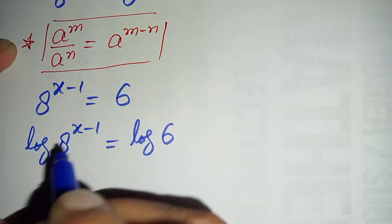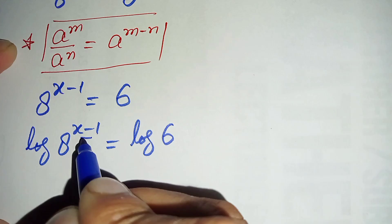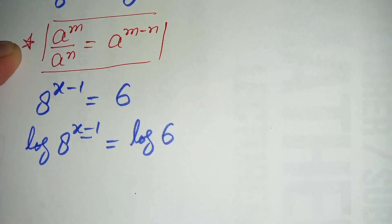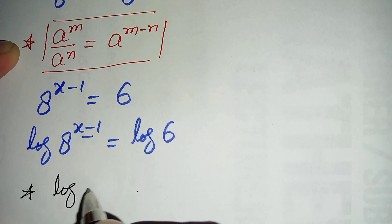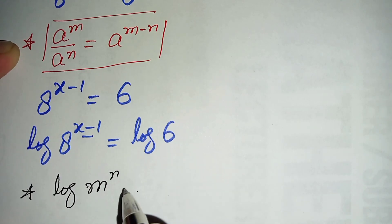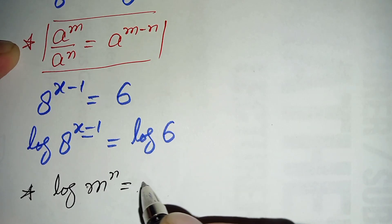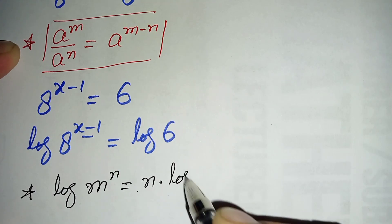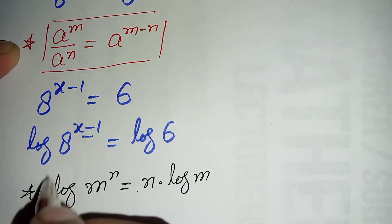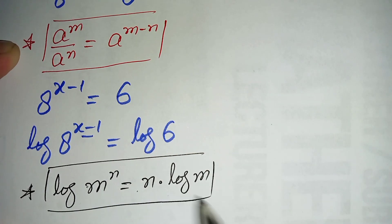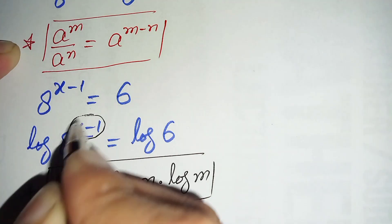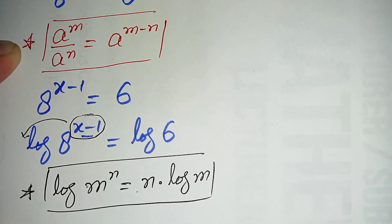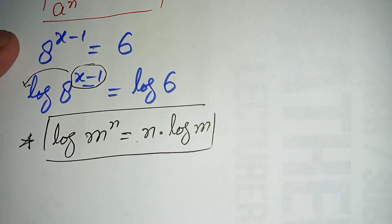On the left hand side, we use the log property: log of m raised to power n equals n times log of m. We move the power (x − 1) to the front of the log. So this equation becomes (x − 1) times log of 8 is equal to log of 6.